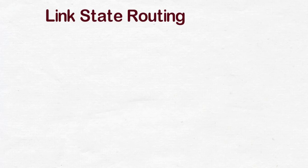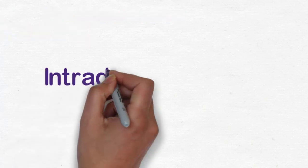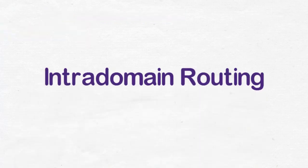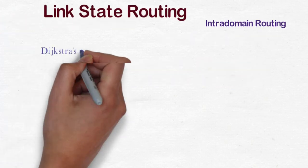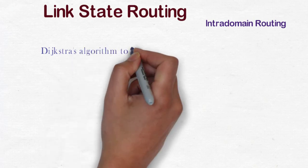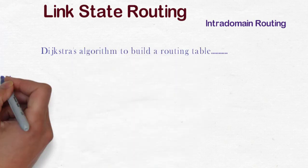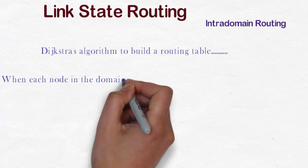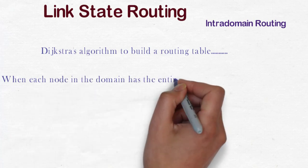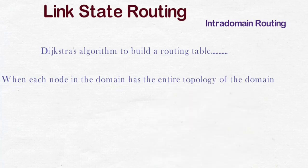Link state routing is one of the algorithms implemented in intra-domain routing protocol. Dijkstra's algorithm is used here to build a routing table when all routers in a network system have knowledge about the total network topology. That is, each node in the domain has details of entire links, type of nodes, and cost.